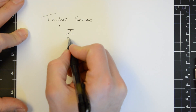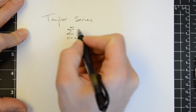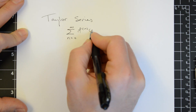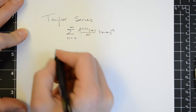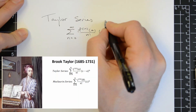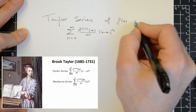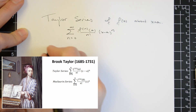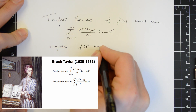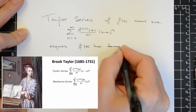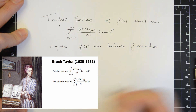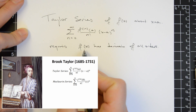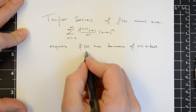The Taylor series is a power series that looks like this: the nth derivative evaluated at a center point of an expansion, a, divided by n factorial, times x minus a to the n. We say that this is a Taylor series of f of x about x equals a. This requires that the function f of x has derivatives of all orders, which means that we can continue differentiating the function to generate its derivatives.